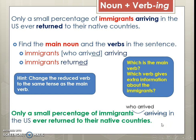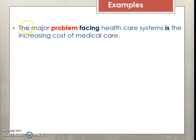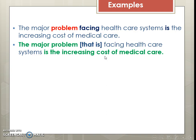So by putting the main noun and the verbs together, we're able to sort out the long sentence. Let's take another look. 'The major problem' — again we have 'facing,' and we're missing the 'is' or 'are.' The main part of the sentence is: 'the major problem is the increasing cost of medical care.' Then we go back and expand it: 'the major problem that is facing health care systems is the increasing cost of medical care.'